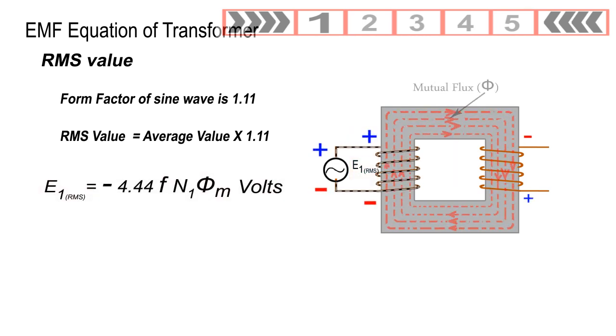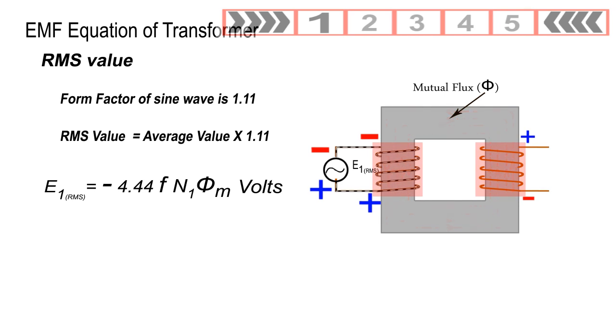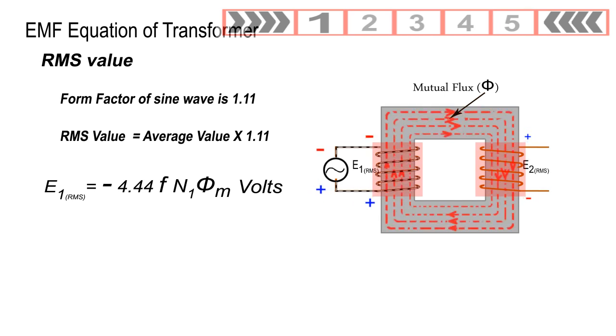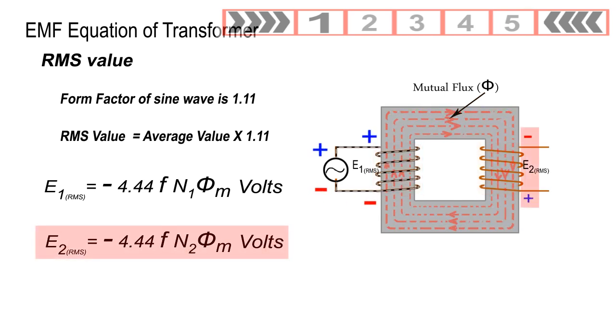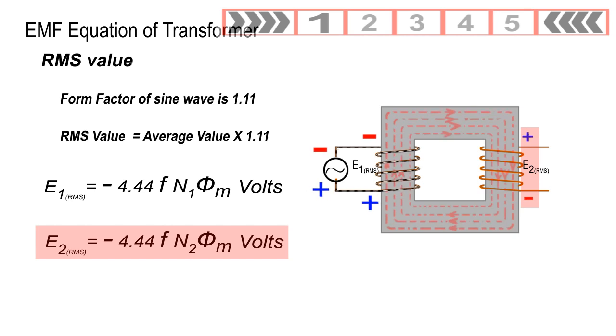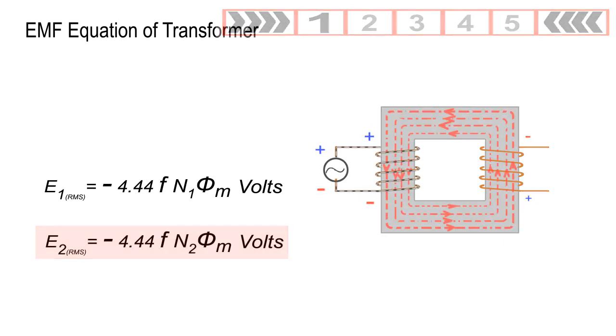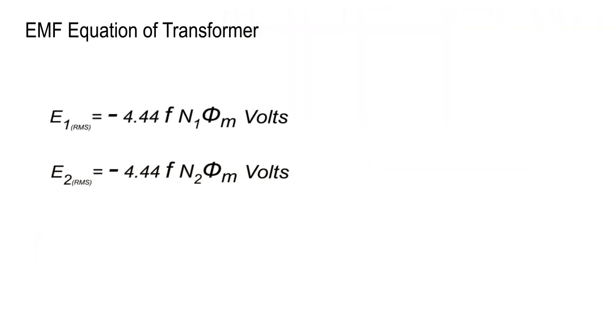We have seen that the mutual flux φM is common to both the windings. In similar way, we can find the RMS value of induced EMF in secondary winding E2 RMS equals minus 4.44fN2φM volts. So, these are the EMF equations.